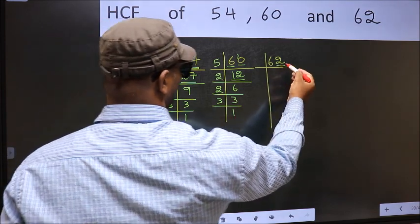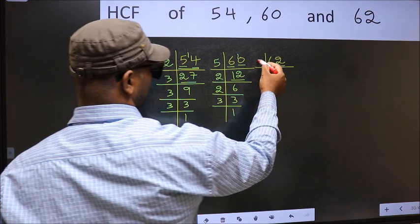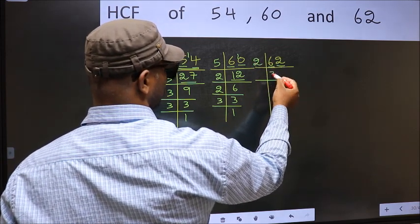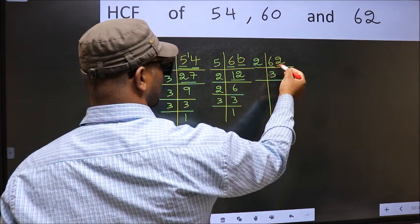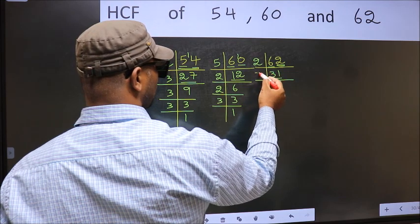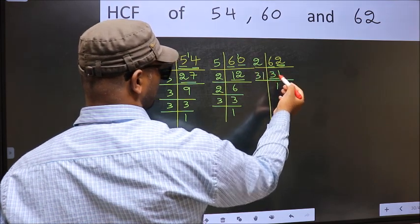Now the other number, last digit 2, even, so take 2. First number, when do we get 6 in 2 table? 2 times 3 is 6. The other number 2. When do we get 2 in 2 table? 2 times 1 is 2. Now 31 is a prime number, so 31 times 1.